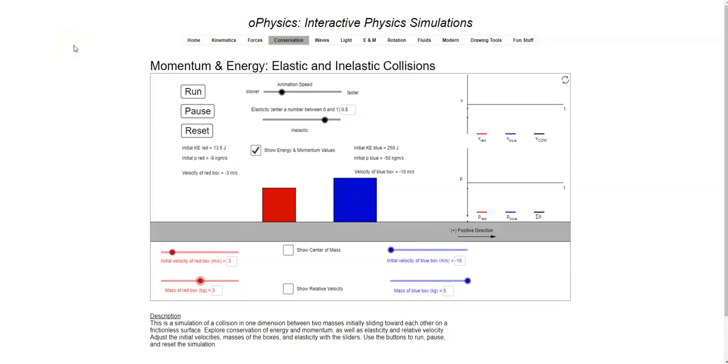So the controls for this app are very similar to the controls for the explosion app, except with this guy, you're going to have motion of both the red box and the blue box before there's an event. In this case, it's a collision instead of an explosion. So again, I took off center of mass, we don't need that. Relative velocity, we don't need that.